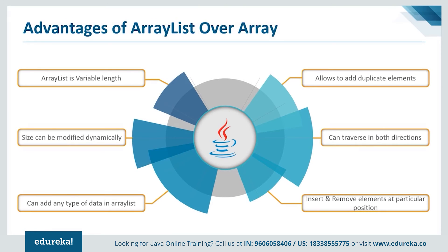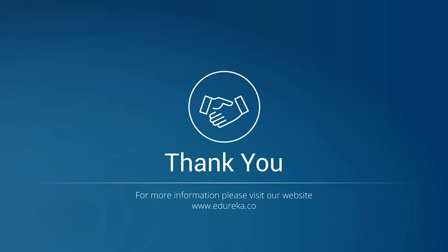Now let's jump into the last topic: advantages of ArrayList over arrays. First, ArrayList is variable length while arrays are fixed length — you cannot change the size of an array once created, but ArrayList can grow and shrink dynamically. The size of an ArrayList is modified dynamically when you add or remove elements. You can add any type of data, including lists and union structures, and it also allows duplicate elements. You can traverse an ArrayList in both directions — forward and backward — using ListIterator, and it allows you to insert and remove elements at a particular position. I hope you understood the concept of ArrayList and the difference between arrays and ArrayList. That's all for the session, thank you and have a nice day.